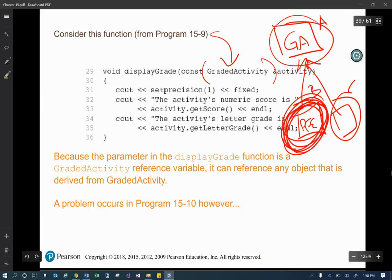If I make a type, make an object of type this B class, this pass-fail exam class, and I pass it into this parameter, it's smart enough to know that because this is of type graded activity, we can do that. But because of that, we're going to be using dynamic binding.